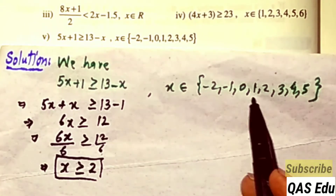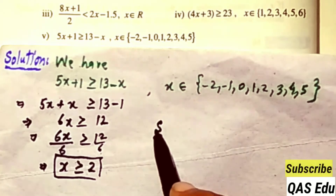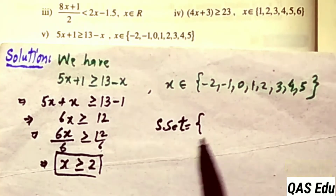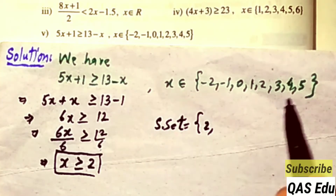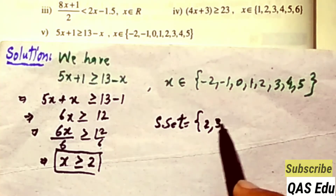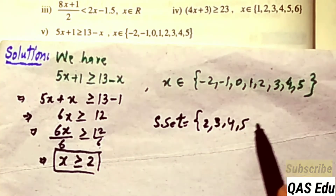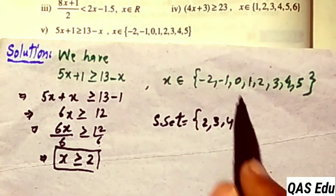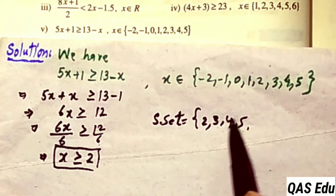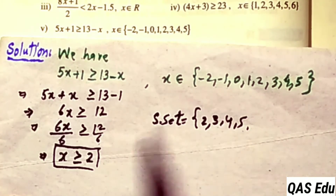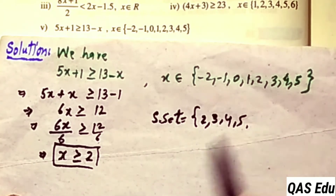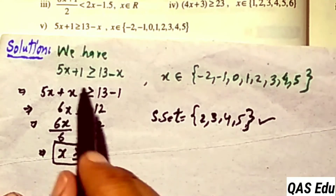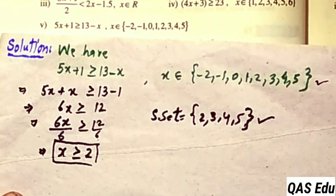So x is greater than or equal to 2. Applying the restriction, the natural numbers starting from 2 are included: 2, 3, 4, 5, and so on. The solution set includes all natural numbers greater than or equal to 2. Since there is no upper limit specified, the solution set goes upward from 2.